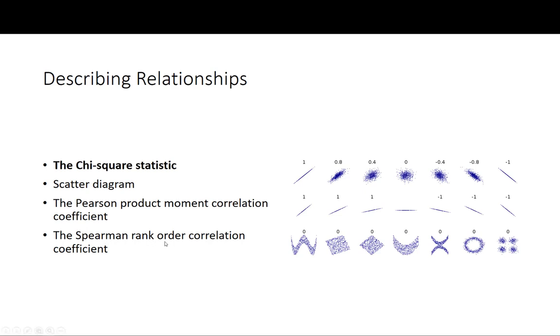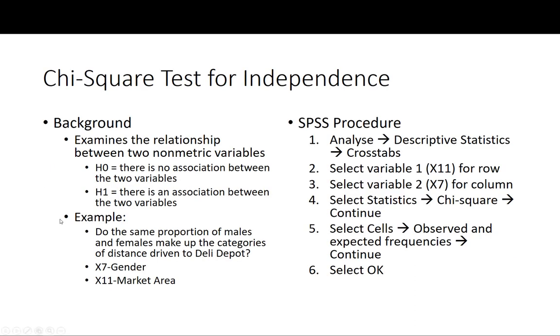So the first one I'm going to talk about is the chi-square statistic. This examines the relationship between two non-metric variables. It's very similar to a crosstab, however in a chi-square statistic you can test for associations between those variables.